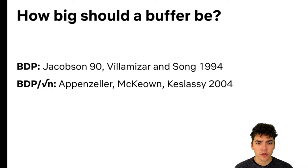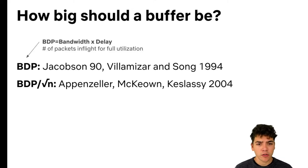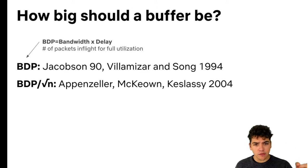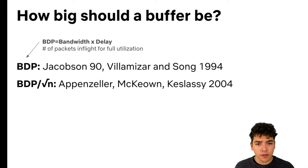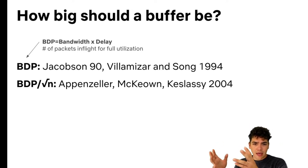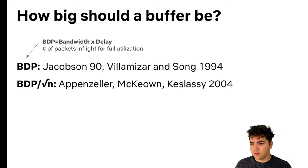There have been a few answers to the question of how big a buffer needs to be. In the 90s, Jacobson, Villa Meiser, and Song argued you need a buffer at least as big as a BDP — the bandwidth delay product — for one TCP Reno flow to fully utilize a link. The BDP is the product of the link bandwidth and the end-to-end round-trip delay. This means we need 100% overhead in buffering to achieve full link utilization.